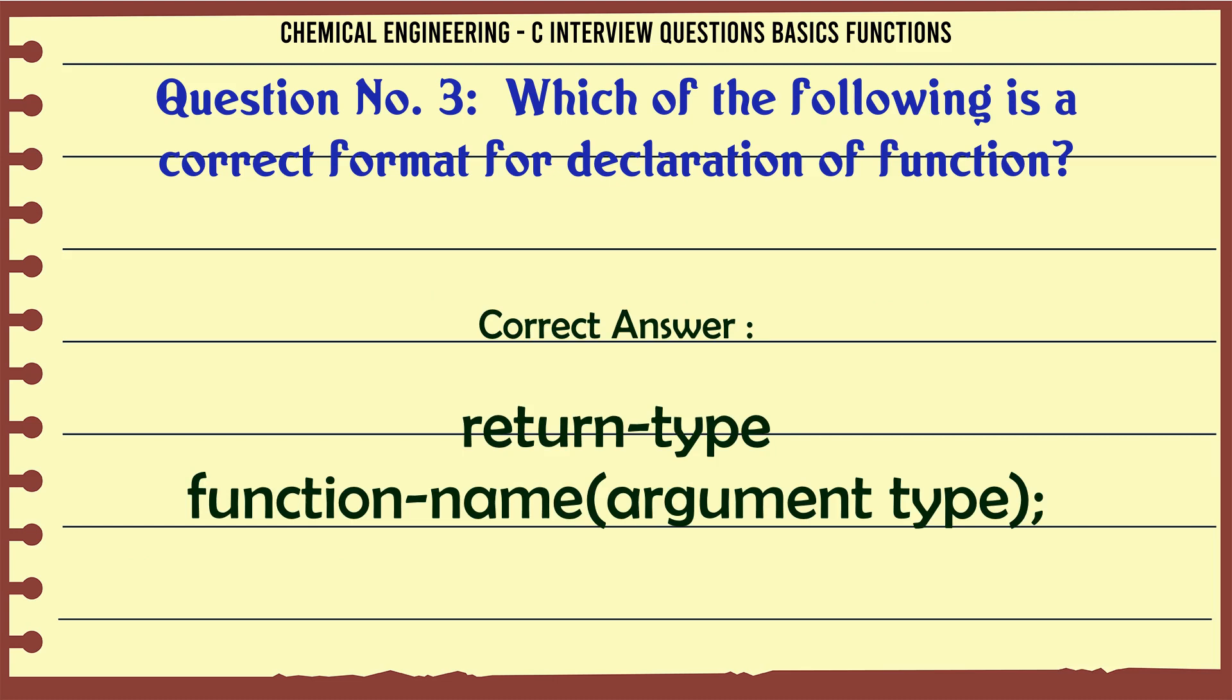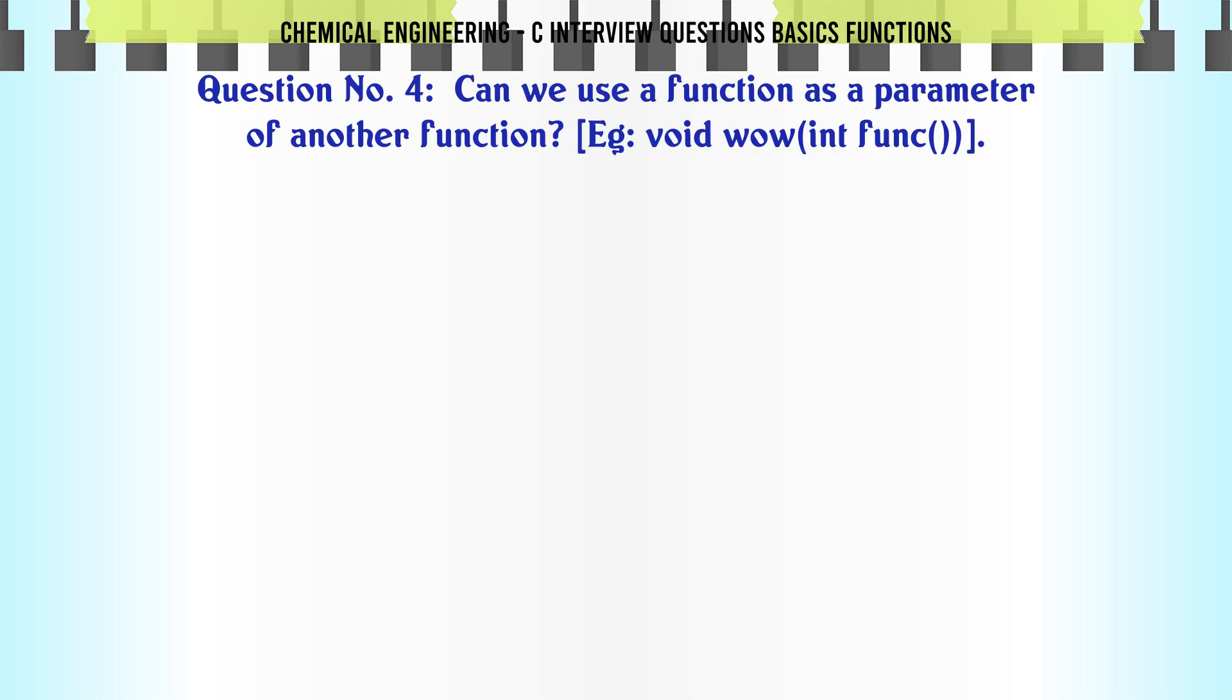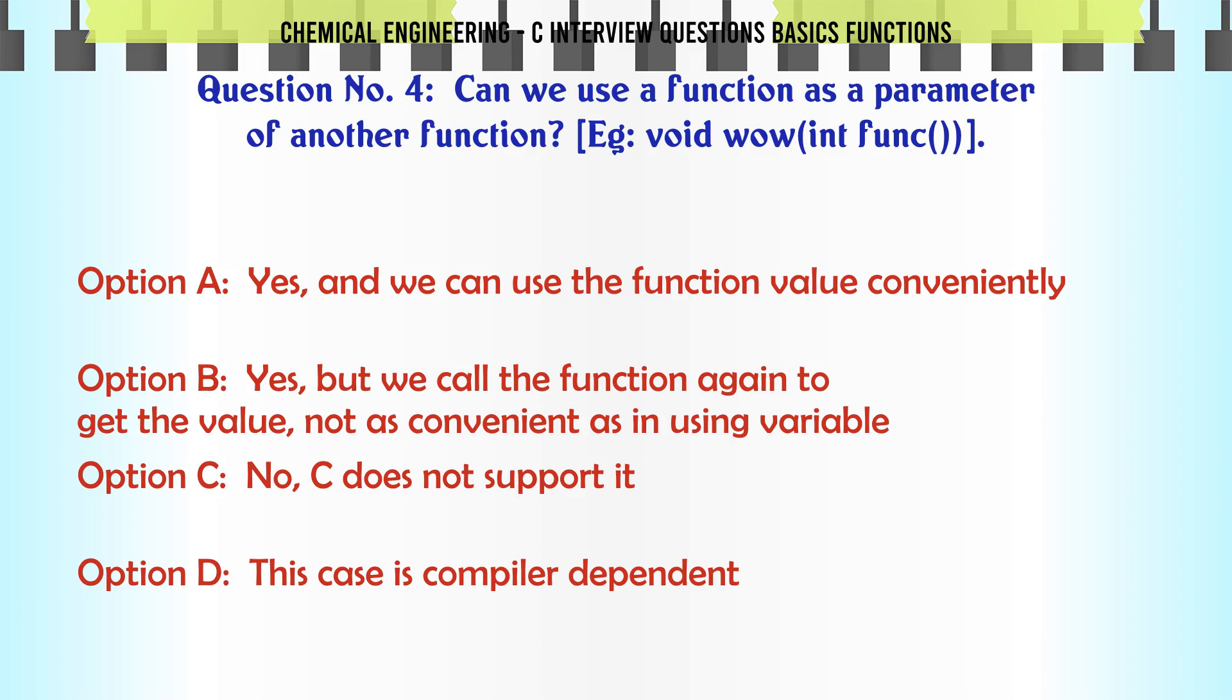Question 4: Can we use a function as a parameter of another function? Example: void wow(int func()). Option A: Yes, and we can use the function value conveniently. Option B: Yes, but we call the function again to get the value, not as convenient as in using variable.